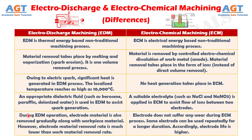Difference No. 5: During Electro-Discharge Machining operation, electrode material is also removed gradually along with the workpiece material. However, the electrode material removal rate is much lower than the work material removal rate. Whereas the electrode does not suffer any wear during the Electro-Chemical Machining process, and the same electrode can be used repeatedly for a longer duration.